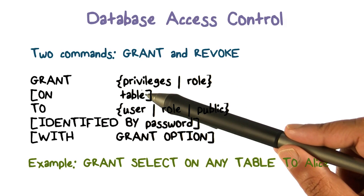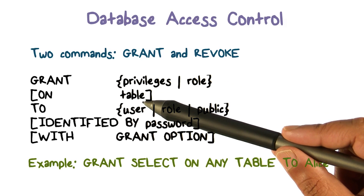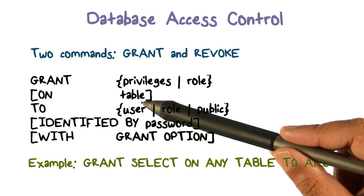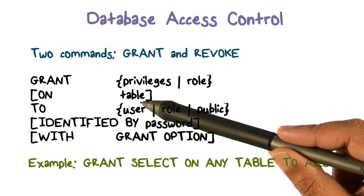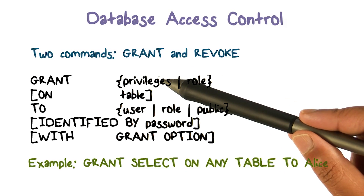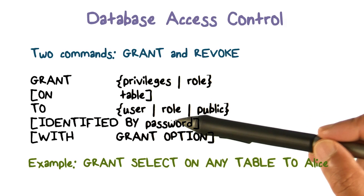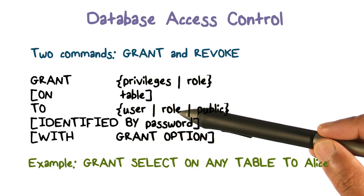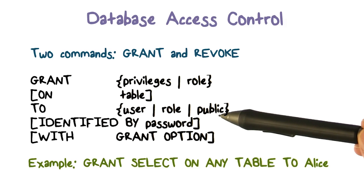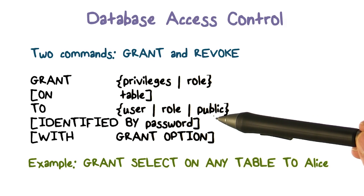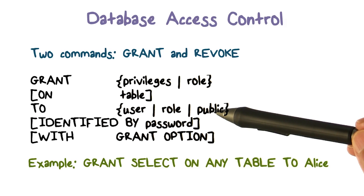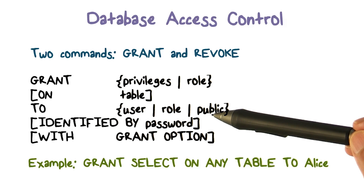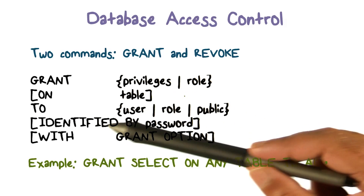That could be in the context of a given table — that's the resource we're talking about. This is what you can do with the resource, and this access is being granted to a certain user. It could be granted to a role — we talked about role-based access control. Or 'public' means it's granted to everyone, every user that we have in the system.